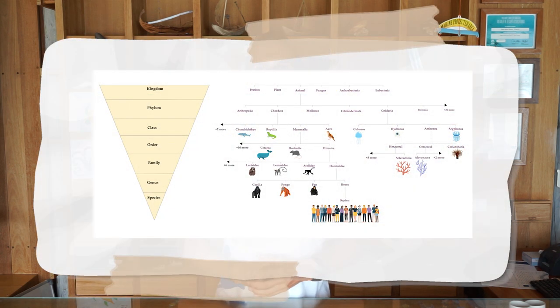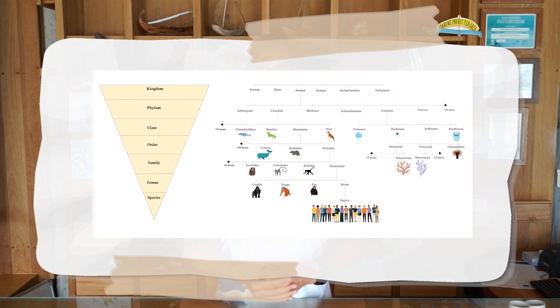Thanks for that, Pip. Biologists study living things and we also like to classify and name everything that we study. We do this in a very special way to make sure that we can talk to each other on either end of the world and not get confused about what plant or animal we're talking about. We use a complicated system called a phylogenetic tree, but what we can call it today is a tree of life. It has seven broad categories but there are also some subcategories which make it even more complex.